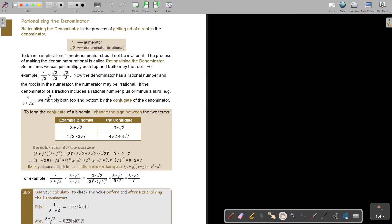If the denominator of a fraction includes a rational number plus or minus a surd, for example do you see there, it's actually two terms in the denominator. So we multiply both top and bottom by the conjugate of the denominator. To form the conjugate of a binomial change the sign between the two terms. So if for example in the denominator 3 plus square root 2 then the conjugate will be 3 minus square root 2. The signs will be opposite, the rest is the same. Exactly the same but if it's a negative I just multiply by a positive.